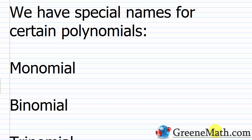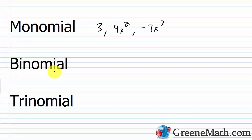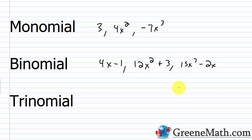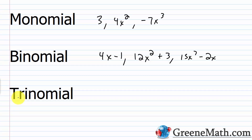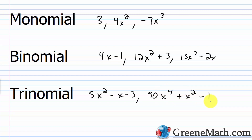Lastly, we have special names for certain polynomials. A single-term polynomial is known as a monomial — for example, the number 3, or 4x squared, or negative 7x cubed. A binomial is a two-term polynomial, such as 4x minus 1, or 12x squared plus 3, or 15x to the 7th power minus 2x. And a trinomial has three terms — think of 'tri' like tricycle with three wheels — for example, 5x squared minus x minus 3, or 90x to the 4th power plus x squared minus 1.